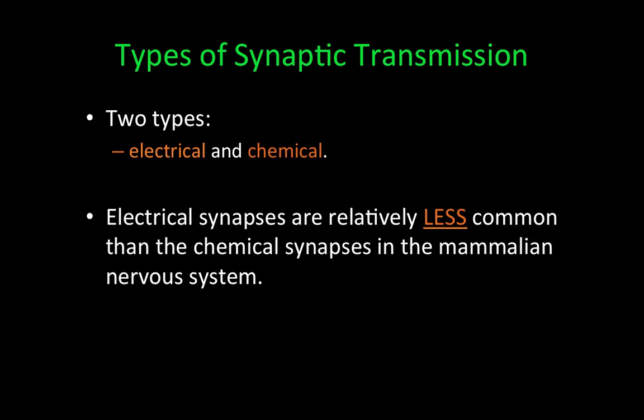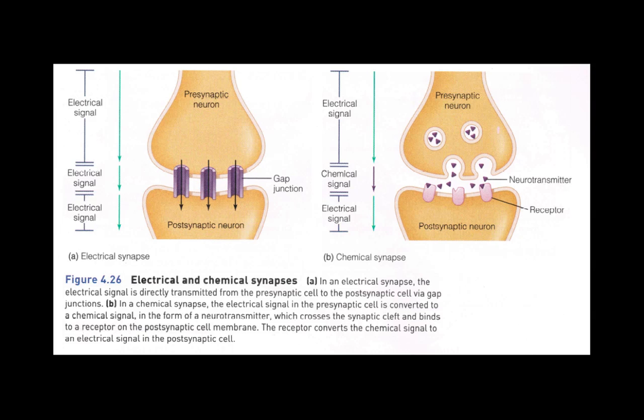There are different types of synaptic transmission. The two main types are electrical and chemical. Electrical synapses are relatively less common than chemical synapses in the mammalian nervous system. For the purpose of these lectures, we're going to be concentrating on the chemical synapse, but let's briefly look at both of them.